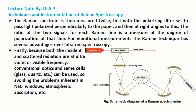For vibrational measurements the Raman technique has several advantages over infrared spectroscopy. Firstly, because both the incident and scattered radiation are at ultraviolet or visible frequency, conventional optics and sample cells that may be glass or quartz can be used, so avoiding the problems inherent in sodium chloride (NaCl) windows and atmospheric absorption.